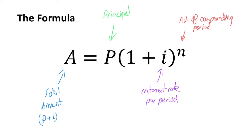So our compound interest formula is A equals P in brackets, 1 plus I, to the power of N. The total amount equals the principal times 1 plus the interest rate per period, to the power of the number of times it's compounding. Let's have a look at how we can use this formula to calculate compound interest.